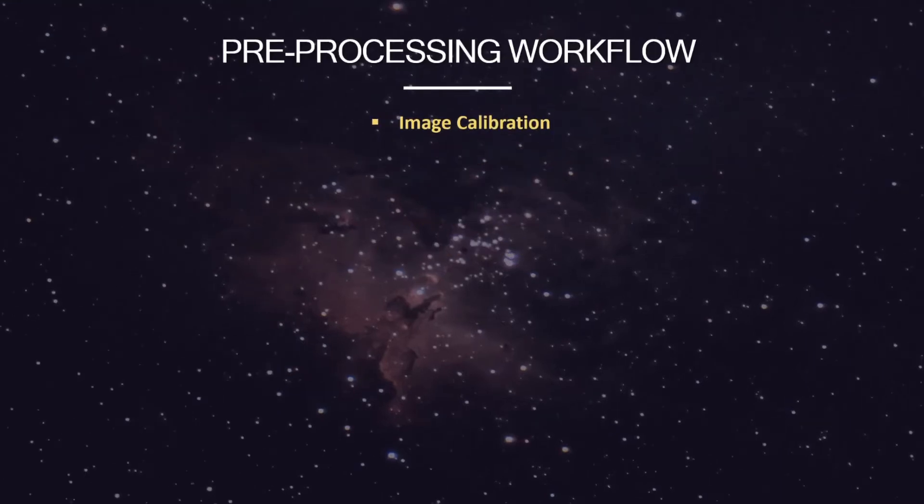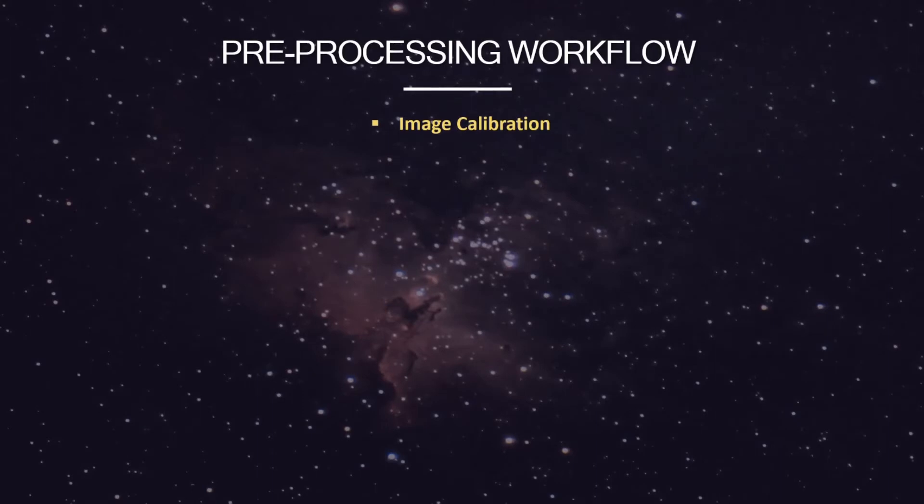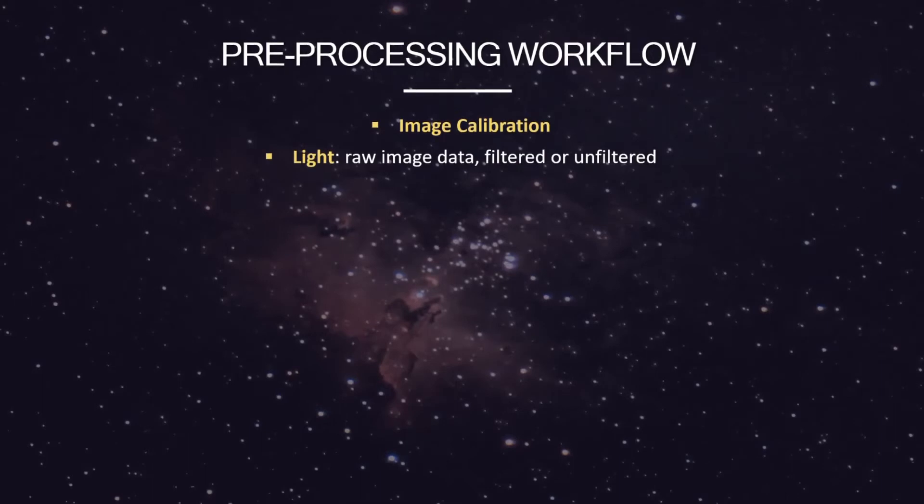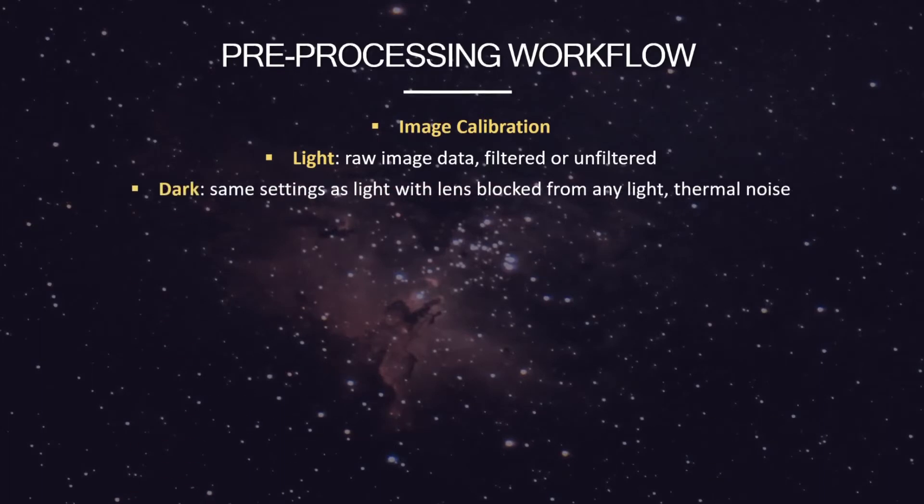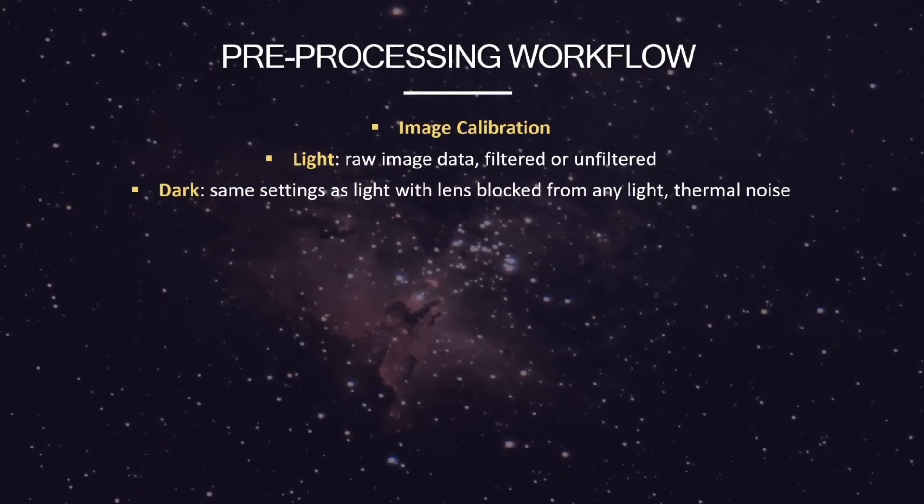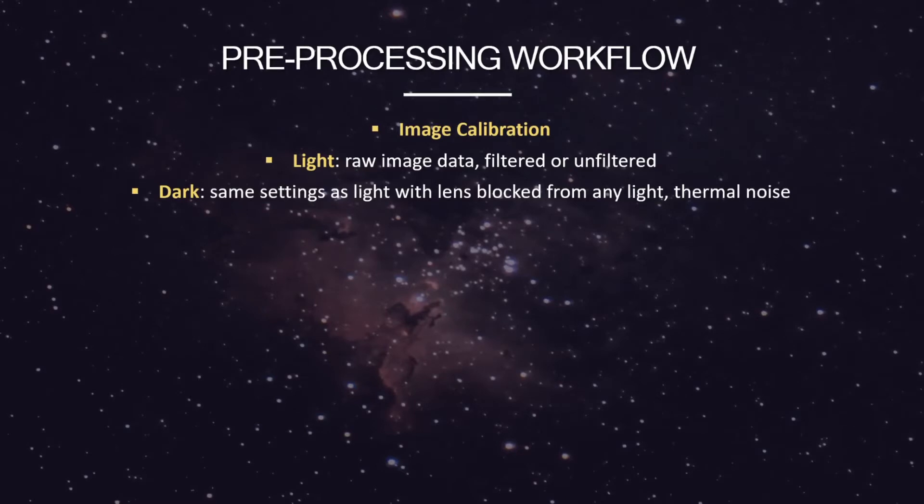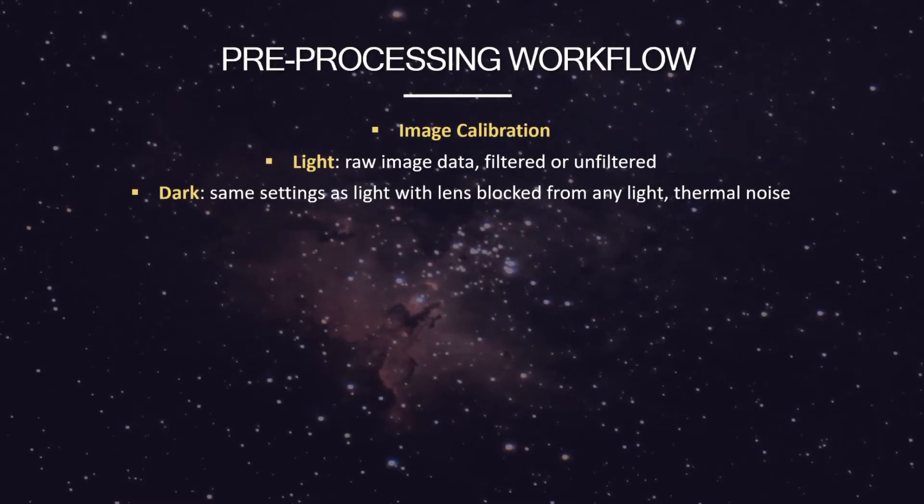The first step is usually image calibration. This involves taking your regular images, these are your actual photographs that you've taken, and then adding what's called calibration frames. For example, a dark has the exact same settings as the light as far as exposure and ISO, but the lens is blocked from any light so that it captures any of the noise from the sensor. This can be subtracted from the lights.